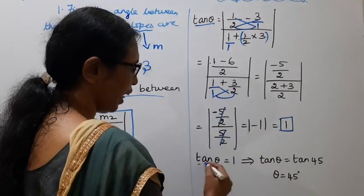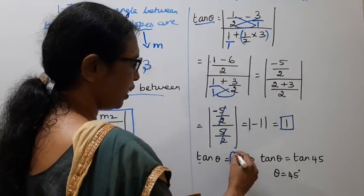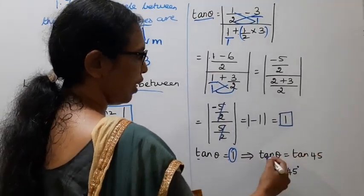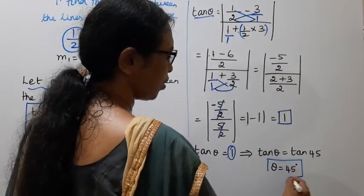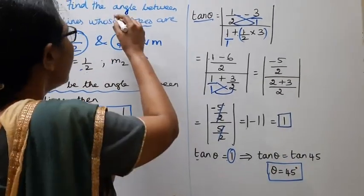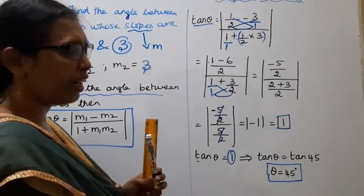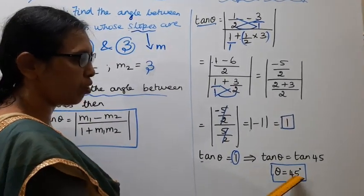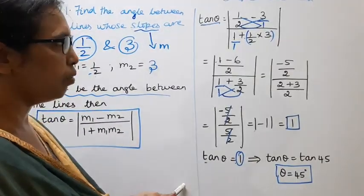Minus 1 modulus is 1. Tan theta equal to 1, which means tan theta equals tan 45 degrees. Therefore, theta equals 45 degrees.